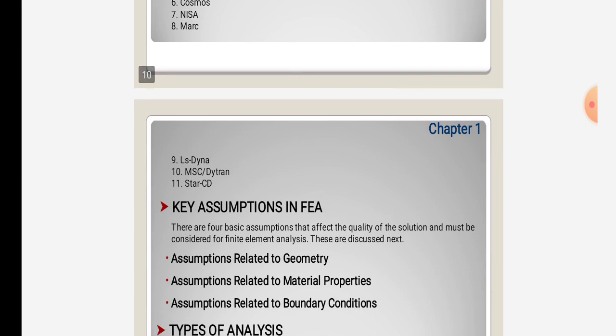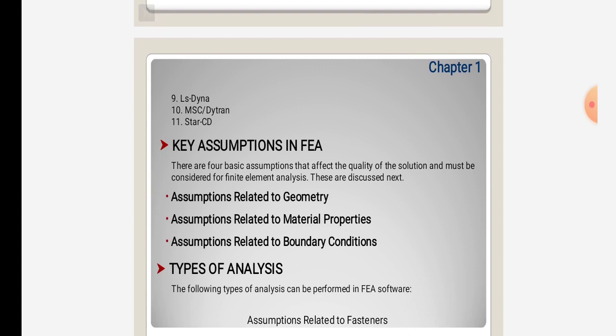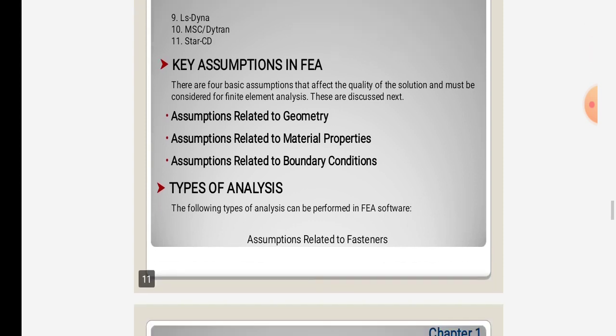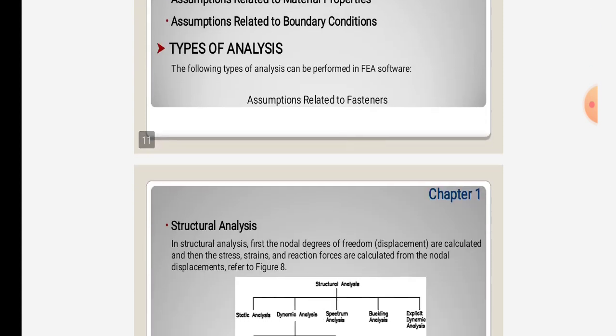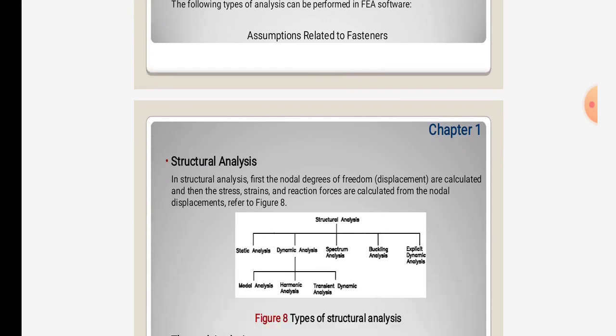Key assumptions in FEA include assumptions related to geometry, material properties, and boundary conditions. There are different types of analysis like structural analysis. In structural analysis, there is static analysis, dynamic analysis, spectrum analysis, and buckling analysis.